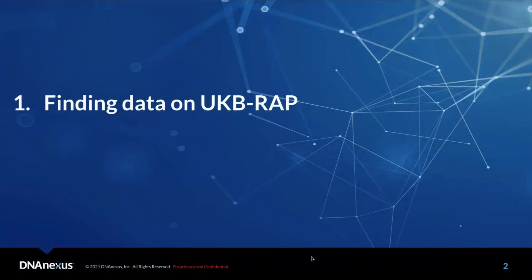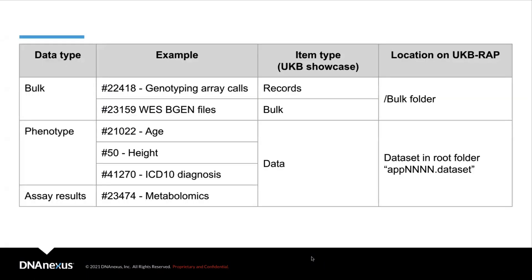Let's first talk about the type of data available to you on the UKBRAP and how it's organized on the platform. In general, data can be found in two places on the platform. First, data can be found in the bulk directory folder and accessed programmatically using software apps from the tool library or using the interactive workstations. Second, data can be found in the .dataset file in the root directory of your project and can be accessed via the cohort browser.